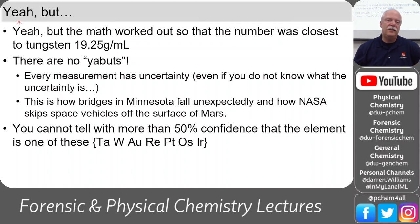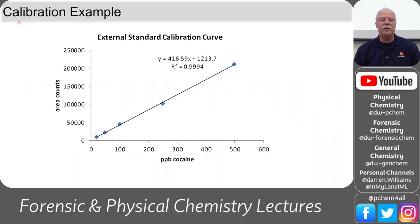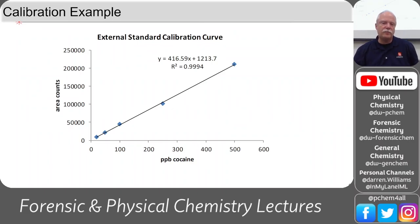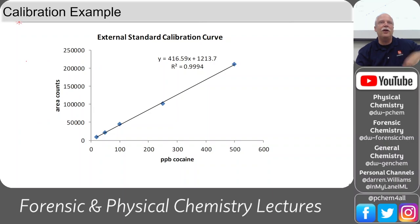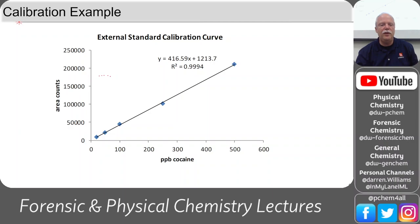Let's dive into applying uncertainty to the calibration curve, since we do that so much in analytical chemistry and forensics. Here's an external standard calibration curve — we've got three nines in our R² value, and the equation is Y = 416.6X + 1214. We have area counts on the Y-axis (maybe from a GC or LC chromatogram) and parts per billion cocaine on the X-axis. It's a very sensitive technique.